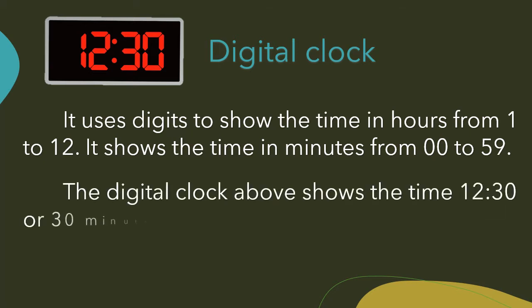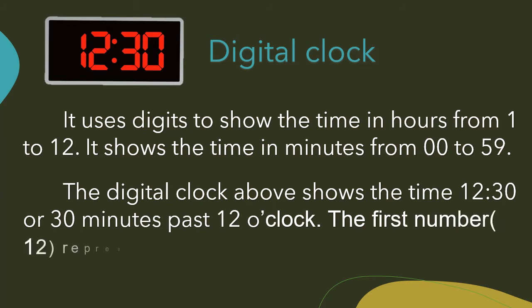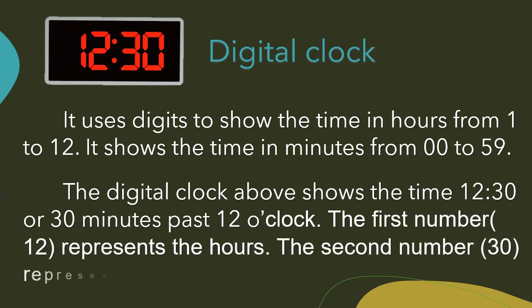The digital above shows the time 12:30 or 30 minutes past 12 o'clock. The first number, 12, represents the hours. The second number, 30, represents the minutes.